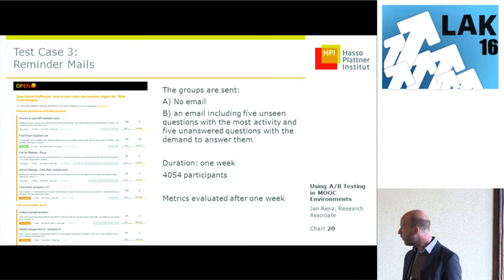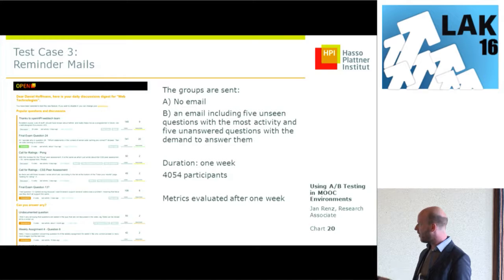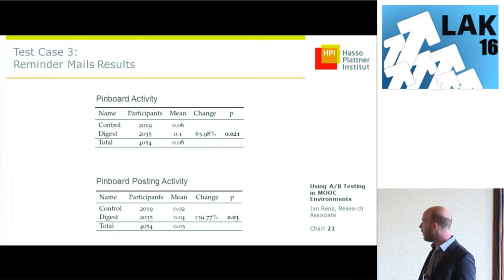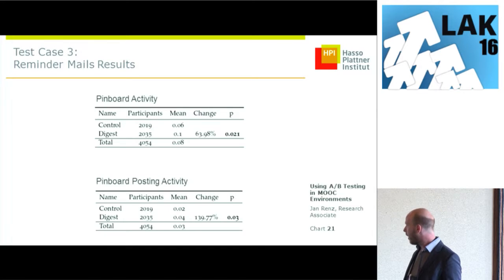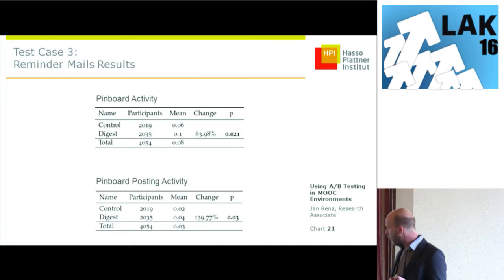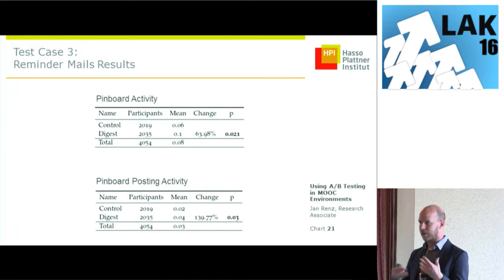The third use case is a reminder mail — a similar concept but this time only social content: normal discussions and questions, since our forum is separated into discussions and questions. We hoped to increase activity in the social parts. People who received the digest mail had an increase with high confidence, so this also seems to work. One thing we learned is that while these are positive metrics, in this setup we still had no idea of any negative impacts — for example, sending out more and more mails may lead to users unsubscribing or feeling the platform is spammy.